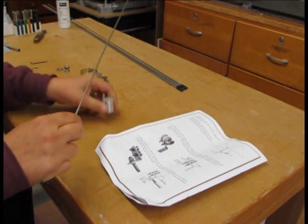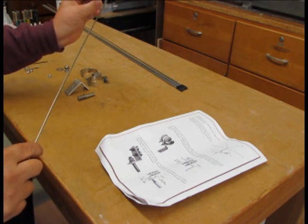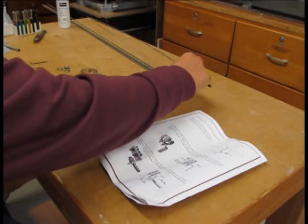These rods then will pass through holes that are drilled in this aluminum block and then the block will be mounted on the antenna.